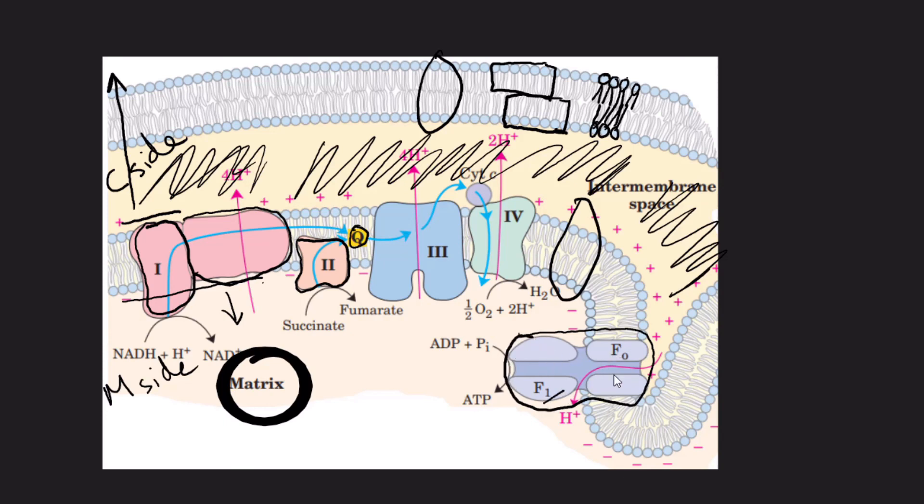Which is known as the F1 F0 ATP synthase or oxysome. This particular protein complex actually makes ATP through the process of phosphorylation, and we can see that a part of this protein complex, the F0 part, is embedded within the inner mitochondrial membrane whereas the F1 knob is protruding into the matrix.